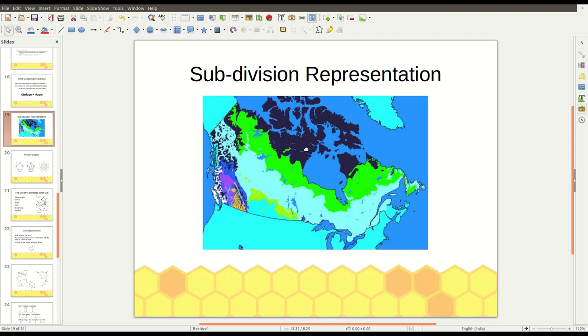you can get a region with intersection of both the faces. Like you can get if there is any region that has 100 mm rainfall and a forest of pine. So in this way, the overlapping of subdivision helps us in geographic information systems.